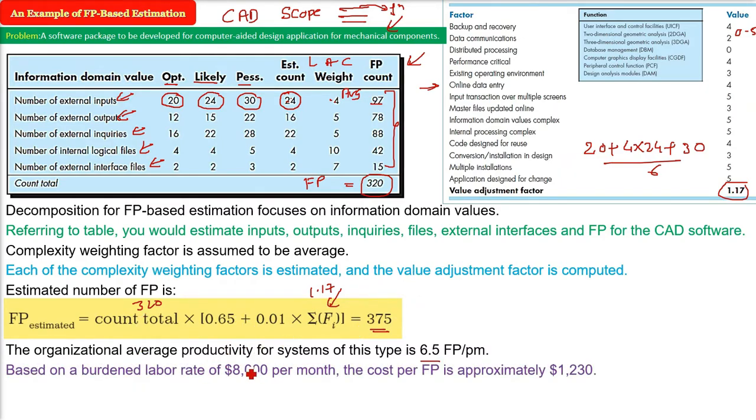Now the labor cost is $8000 per month, burden labor rate. So the cost per FP, cost per function point is what? See, $8000 is the dollars and divided by 6.5, what do you get? 1230. So the cost per FP, function point, is around 1230.